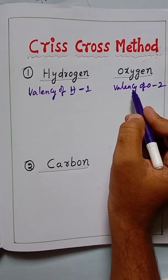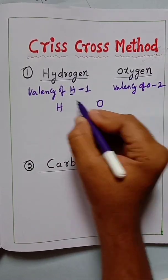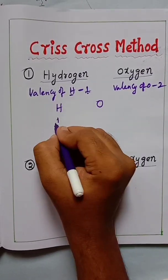So we can find the molecular compound formula by using Criss Cross method. You have to write the element symbol here: hydrogen symbol is H, oxygen symbol is O. Hydrogen valency is 1, oxygen valency is 2.